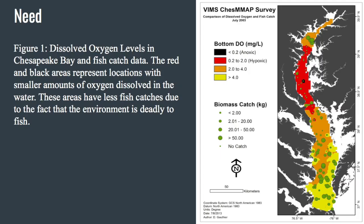Each year, roughly 300 million pounds of polluting nitrogen reaches the Chesapeake Bay, about six times the amount that reached the bay in the 1600s. This exponential increase in the amount of nitrates and phosphates that reaches the bay can be attributed to the people's use of nitrates and phosphates.